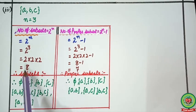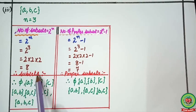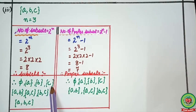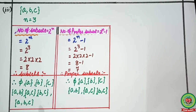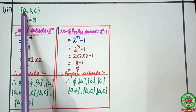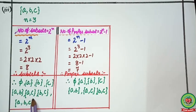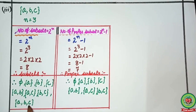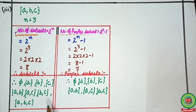So the subsets of {A, B, C} are: first, the empty set ∅; then the single-element sets {A}, {B}, {C}. That gives 4 so far, with 4 more to make. Now we form pairs: {A, B}, {A, C}, {B, C}, and finally the set itself {A, B, C}. Counting: 1, 2, 3, 4, 5, 6, 7, 8. We have made all 8 subsets.